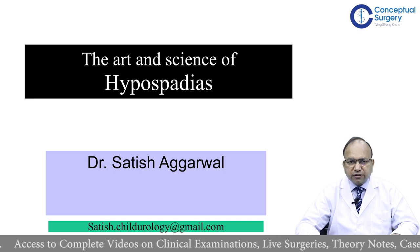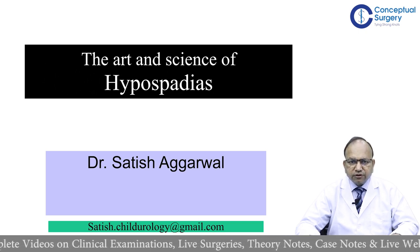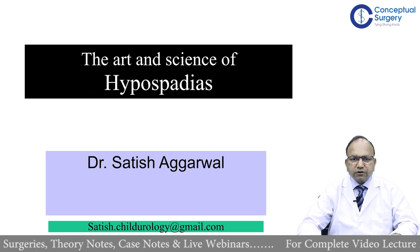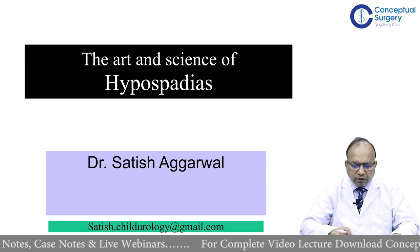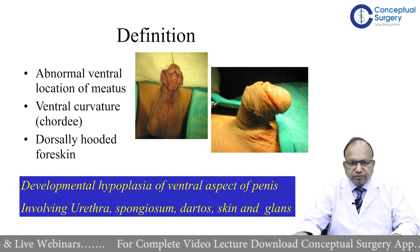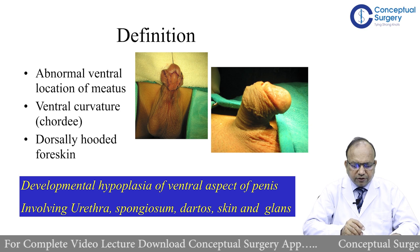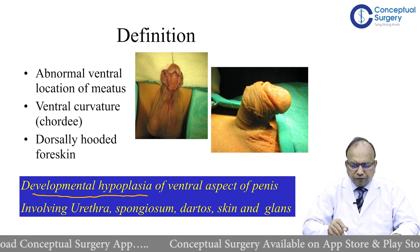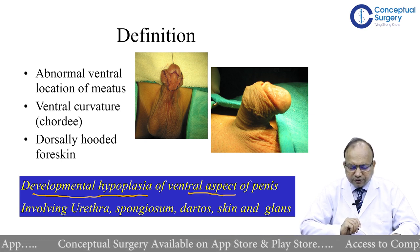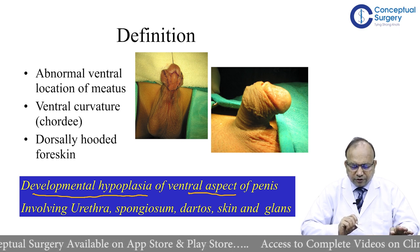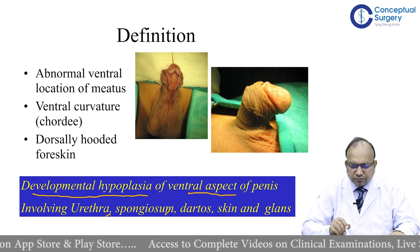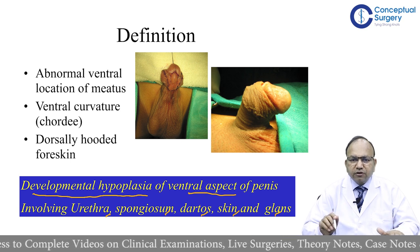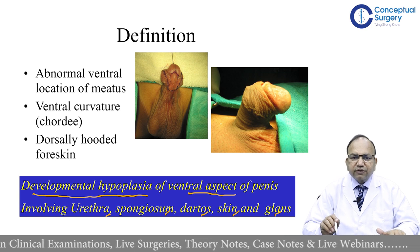MS and DNB Surgery candidates need not know the details about surgery, but for Pediatric Surgery super-speciality they need to know a lot about surgical aspects also. Hypospadias is a developmental hypoplasia of the ventral aspect of the penis. It involves several components: the urethra, the corpus spongiosum, the dartos, the skin, and the glans — so almost everything on the ventral aspect of the penis is deficient.